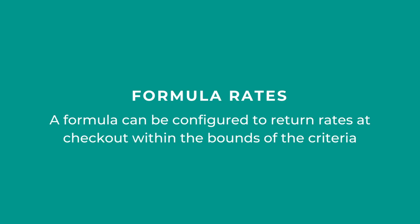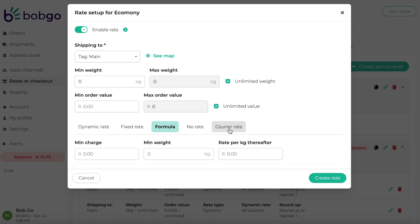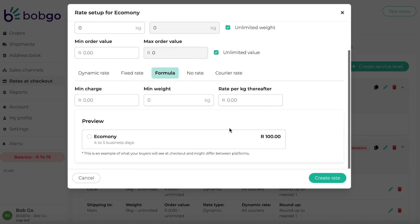A formula rate can be configured to return rates at checkout within the bounds of the criteria, based on a minimum charge and a minimum weight with a rate per kilogram thereafter. When setting up a formula rate, include a minimum charge, a minimum weight, and a rate per kilogram thereafter.